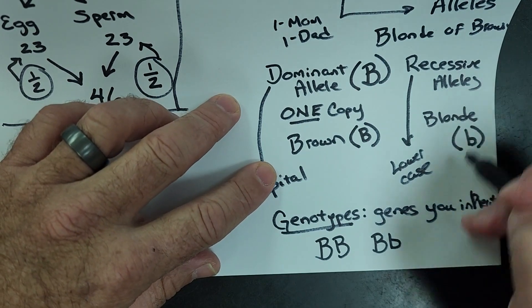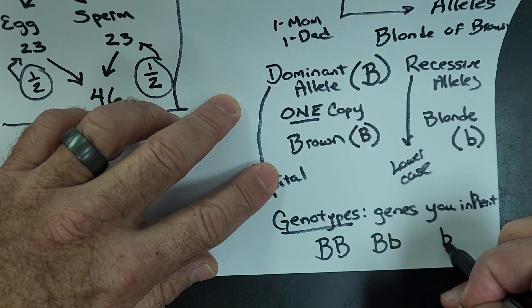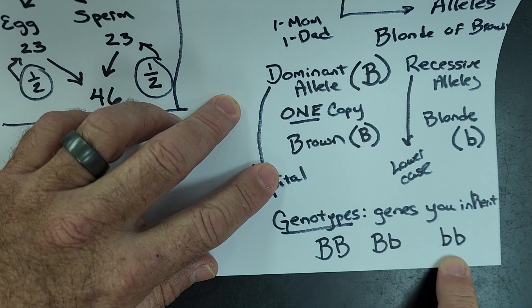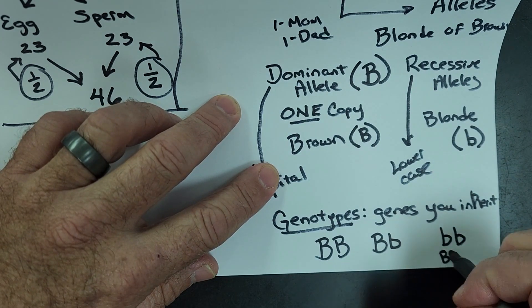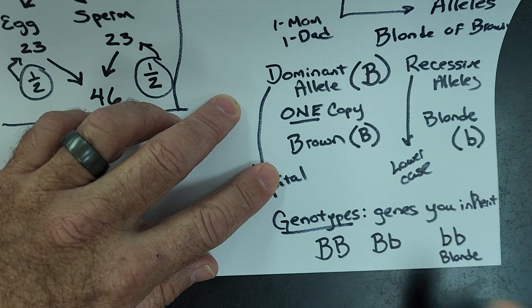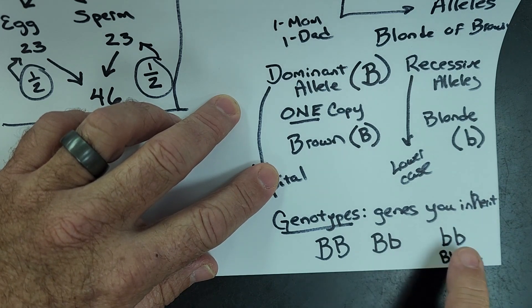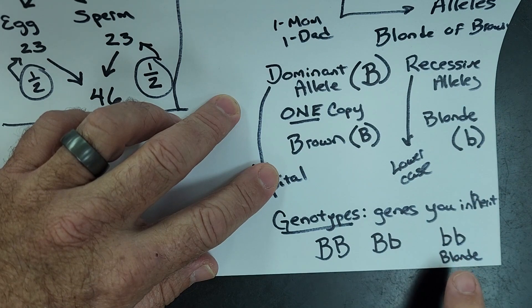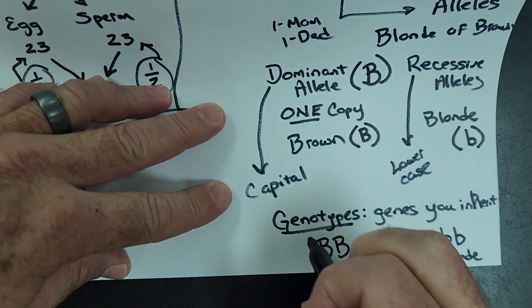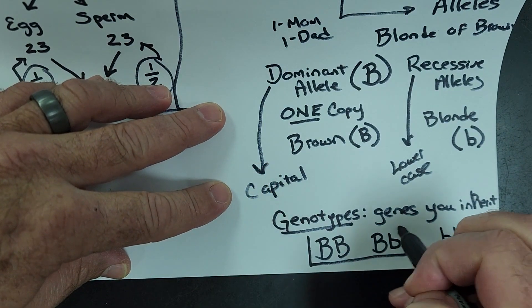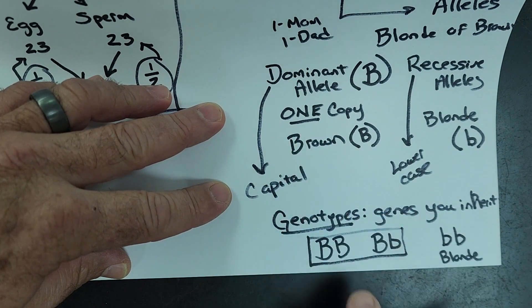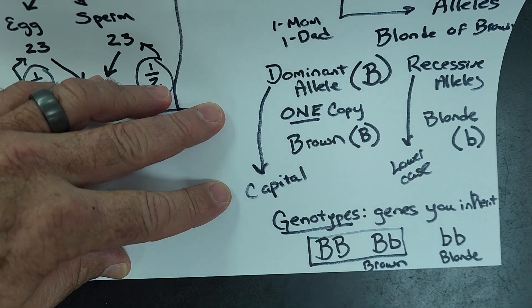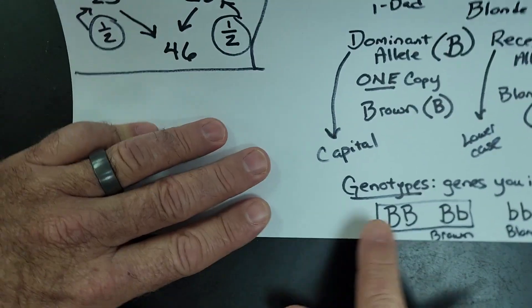You can also possibly get two small b's. If you get this, this person has blonde hair. The only way you can have a recessive trait is if you get two recessive genes. Because remember, if you get one copy of the dominant gene, then you express the dominant trait.